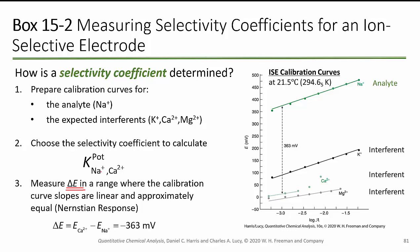We've got this Nernstian response. The change in potential is going to be equal to the potential for calcium minus the potential for sodium, and in this case we get minus 363 millivolts. As our analyte concentration goes up, how does selectivity change? Looking at sodium as our analyte, we see a particular slope. If we throw in some calcium, you'll notice it changes a little bit — we've got some interferences.